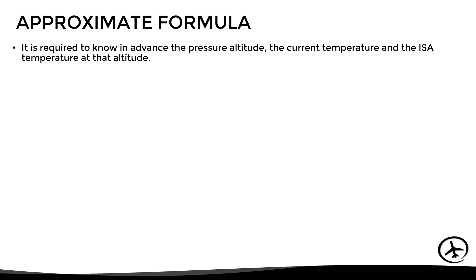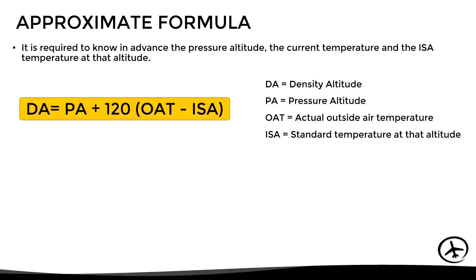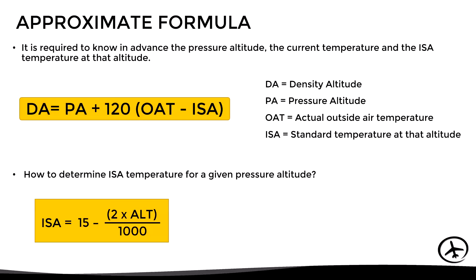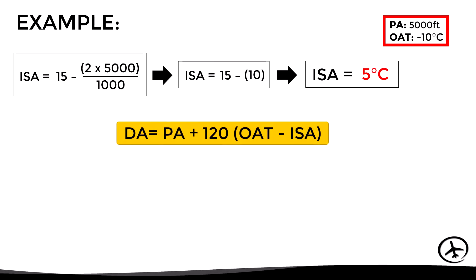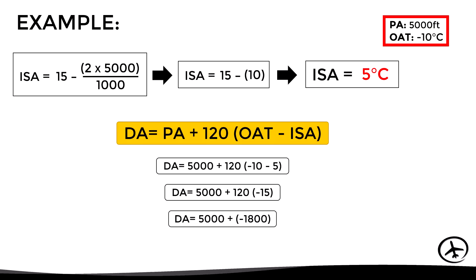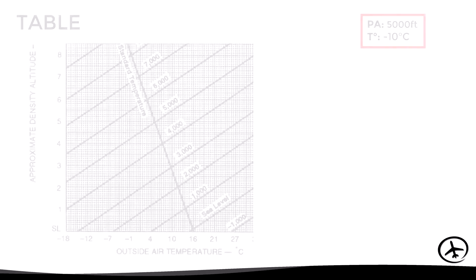For the approximate formula, we need the pressure altitude, current air temperature, and standard temperature at that altitude. An additional step is required: determining the standard temperature at the corresponding pressure altitude using a separate formula. For the same conditions — pressure altitude 5,000 feet — we first calculate the standard temperature, obtaining 5 degrees Celsius, then apply the density altitude formula, obtaining a result of 3,200 feet.